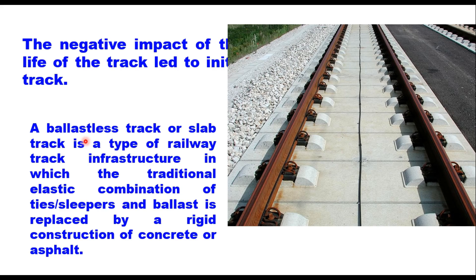The negative impact of the ballast on service life of the track has led to initial designs of ballastless track. A ballastless track, also called slab track, is a type of railway track infrastructure in which the traditional elastic combination of sleepers and ballast is replaced by a rigid construction of concrete or asphalt. In ballastless track, the rails are rigidly fastened to special type of sleepers that are themselves set in concrete.